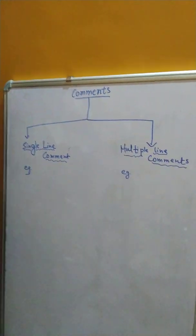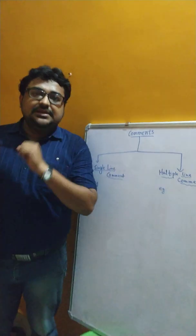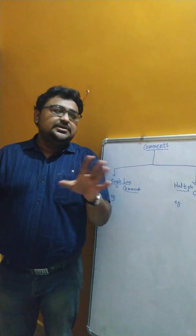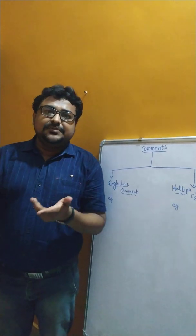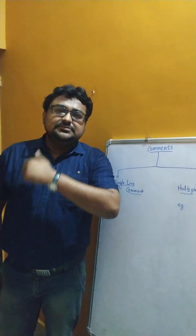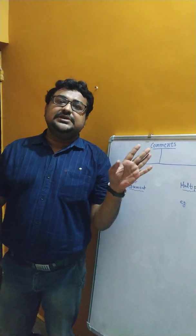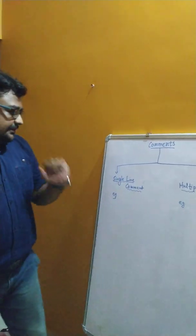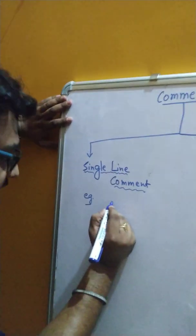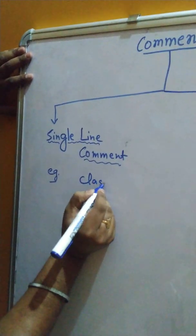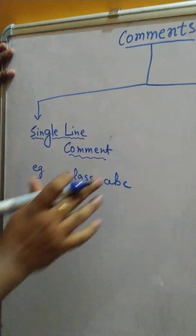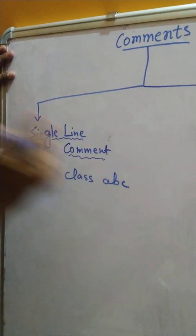For single line comments, the definition is: the comment which is for a single line only is called a single line comment. For multiple line comments, obviously more than one line of comment is called a multiple line comment. Very simple definitions. Now let's look at the examples.